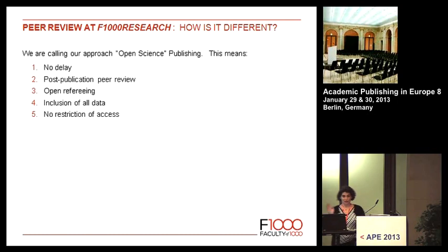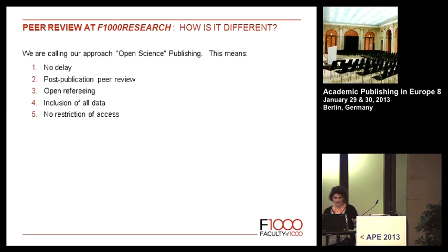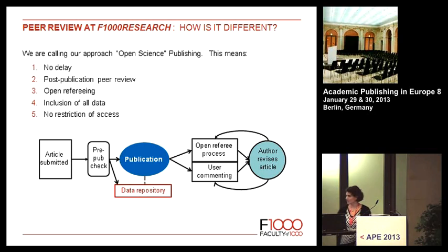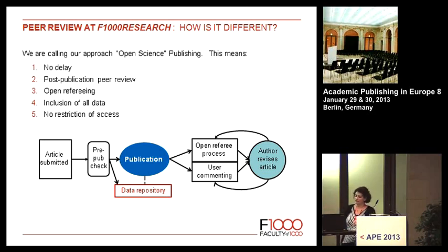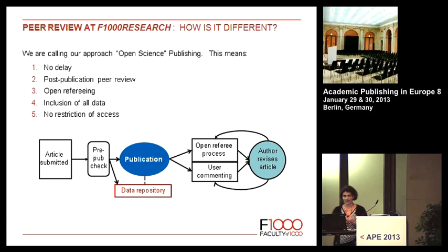One of the other things we do is inclusion of all the data, which I'll come on to in a second. There's no restriction of access — it's gold open access with CC BY licences and CC0 for the data. You submit the article, it goes through a pre-publication check, gets published, the data goes into the repository, and it enters the open referee process. At the same time, any registered user who demonstrates they're a scientist — providing their full name and affiliation, which will be published with their comment — can also comment.